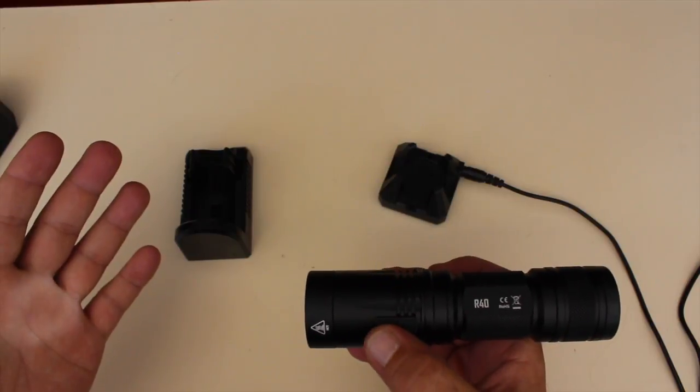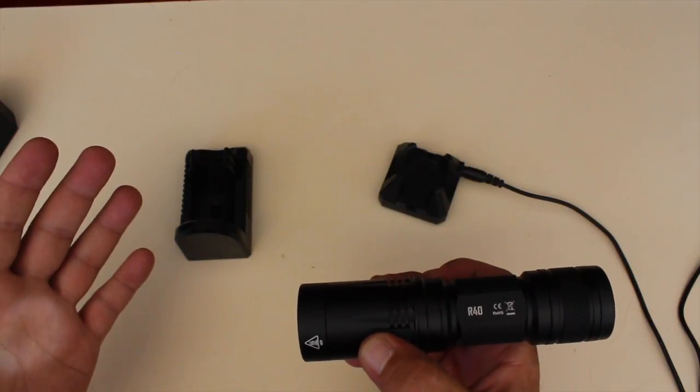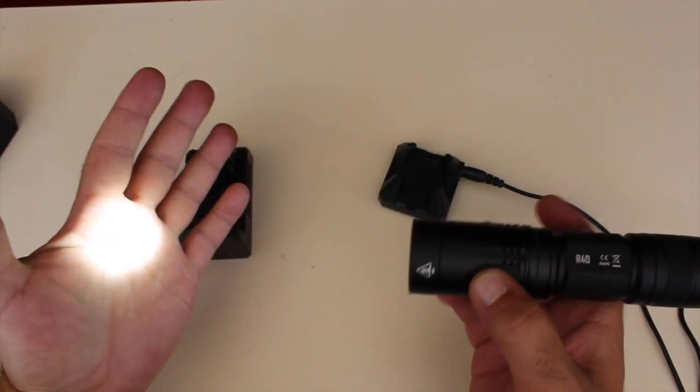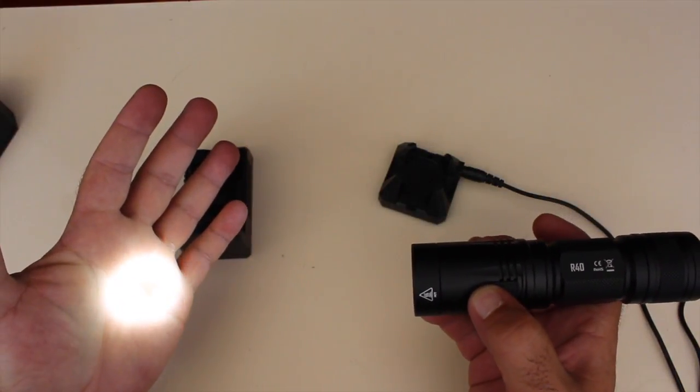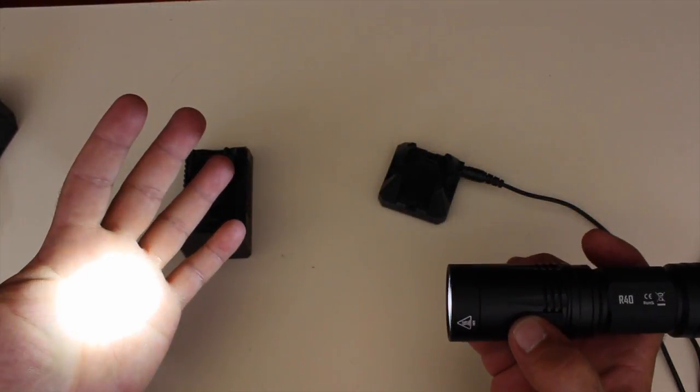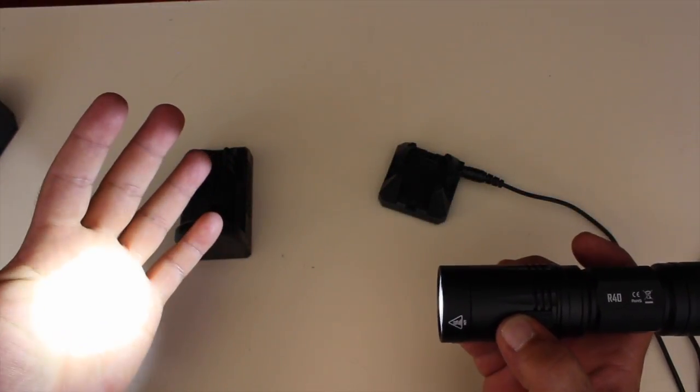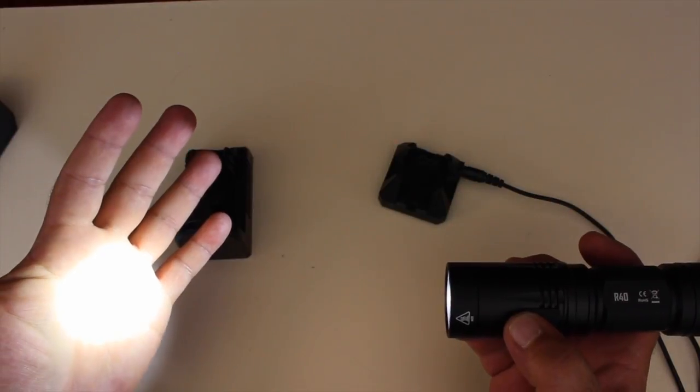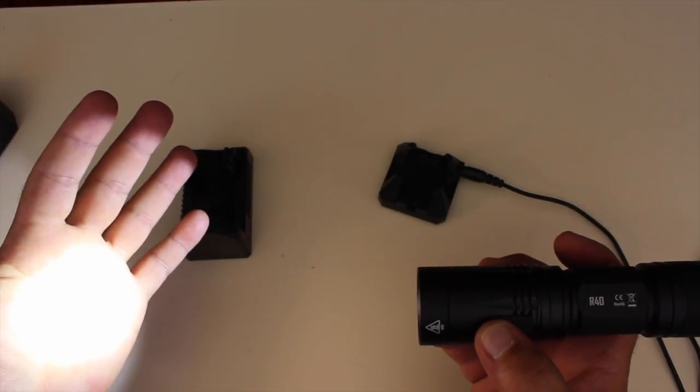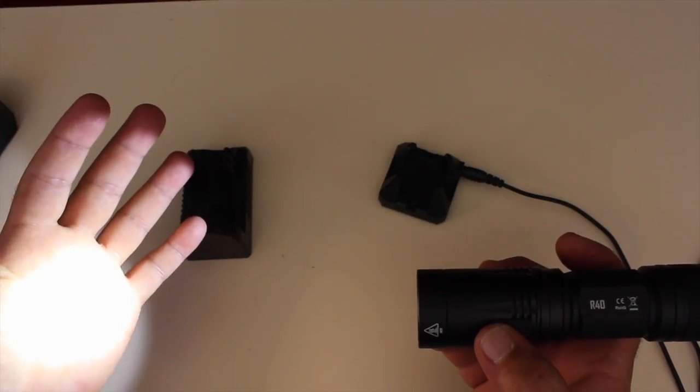Here's your one lumen, which will last approximately a thousand hours. Then you go to 50 lumens, which will give you 32 hours, 200 lumens which will give you 10 and a half hours, 420 lumens which will give you four and a half hours of runtime, and your turbo mode of 1000, which will give you an hour and a half of runtime.